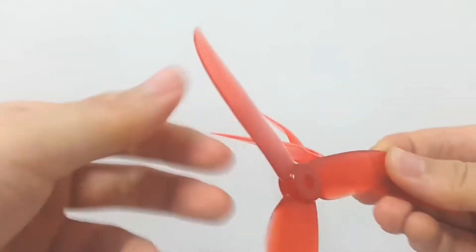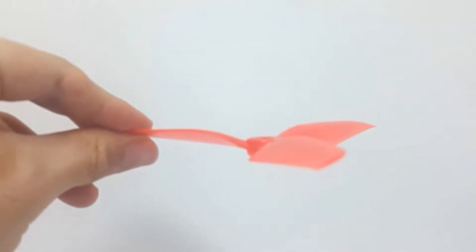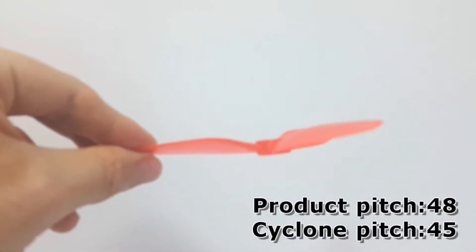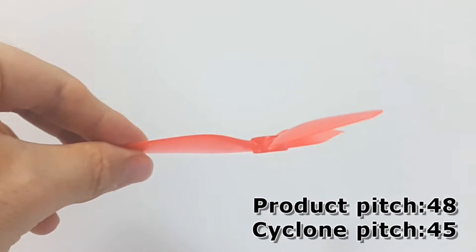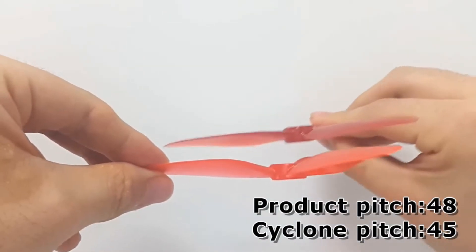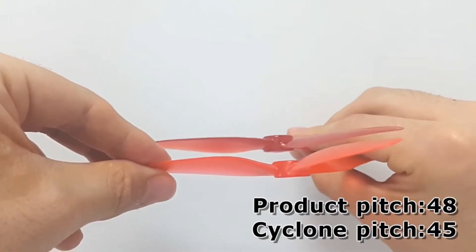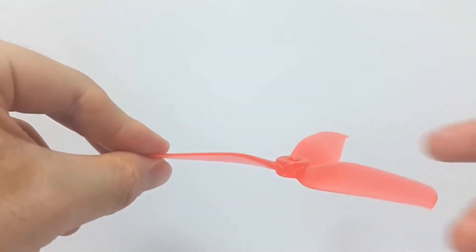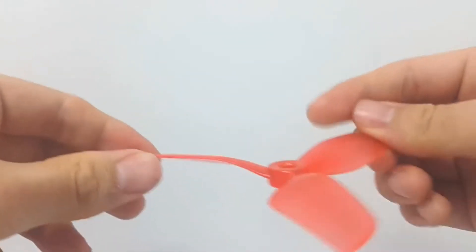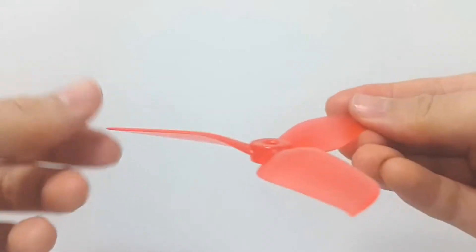The biggest difference is this is the 5048 so it's got more pitch to the prop. And this prop has less scoop, less pitch. So this guy is going to scoop more air and going to have more thrust.